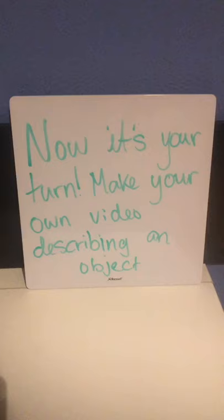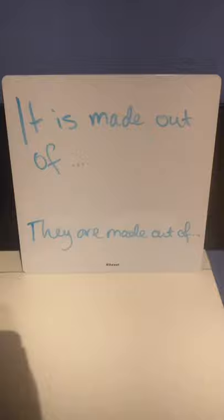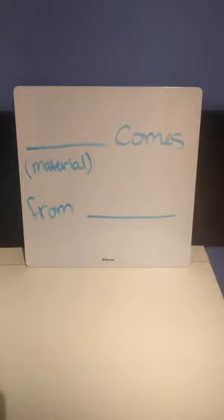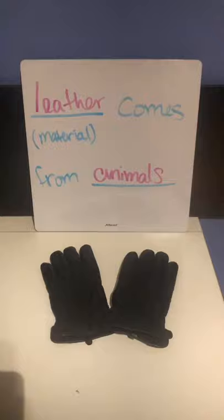Make your own video describing an object. Remember: this is a, or these are. This is a glass. These are gloves. Tell us what it or they are made out of. The glass is made out of glass. The gloves are made out of leather. Then tell us where the material comes from. Glass comes from sand. Leather comes from animals.